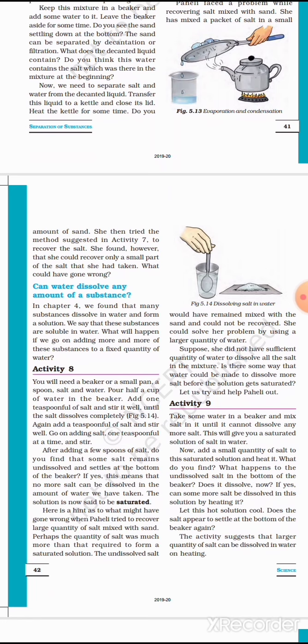Saturated means for example if you are adding salt in a beaker of water, if at one stage the salt does not dissolve in water, that stage we call it as saturated. For example if you are taking one teaspoon of salt in a tumbler of water, what happens? It mixes. After that you are adding two spoons, three spoons, four spoons. If you go on adding, at one stage the salt does not mix with the water. At that stage we call it as saturated.